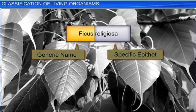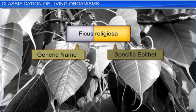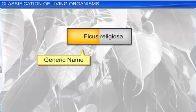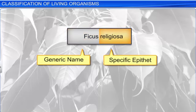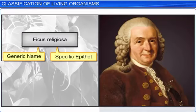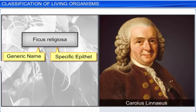Ficus represents the genus or the generic name, while religiosa denotes the specific epithet. This system of representing a name with two components is called Binomial Nomenclature, and was devised by Carolus Linnaeus, also known as the father of modern taxonomy.